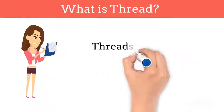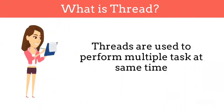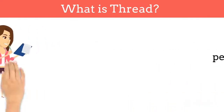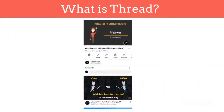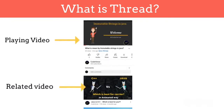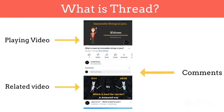Now let's understand what is thread and why we need it. Threads are used when you want to perform multiple tasks at the same time. Consider a YouTube video — when you play a YouTube video, there are lots of tasks going on at the same time, like playing video, showing related video, showing comments, showing ads, and you can see that all of these tasks are running at the same time. Threads come into the picture here.